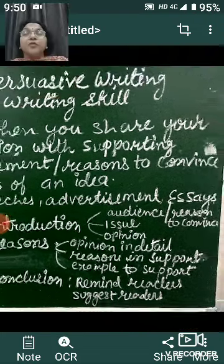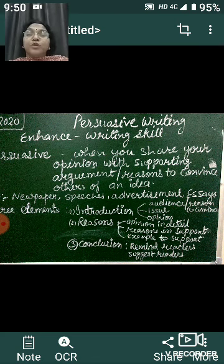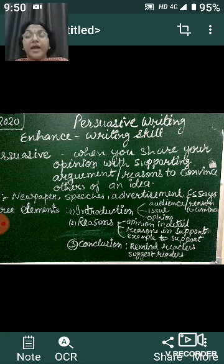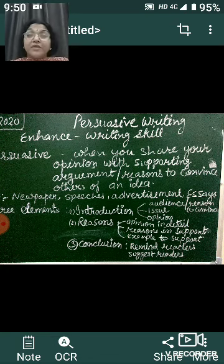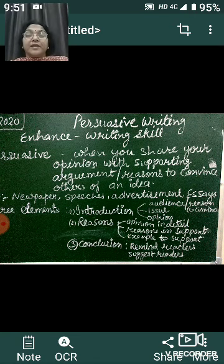So, what we read today: we read about persuasive writing — that means sharing our opinion in order to convince others, the person who is reading, with our idea. I gave you examples of persuasive writing such as newspapers, which are really persuasive, and advertisements, which we observe on television and come to know about different products. Then we talked about the three elements of persuasive writing: introduction, reason, and conclusion.